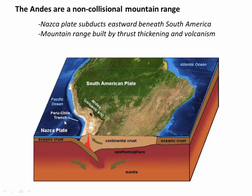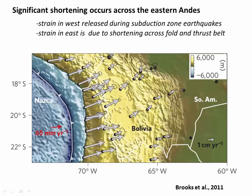So what are the Andes? How are they formed? They're a non-collisional mountain range. What that means is that, unlike the Himalaya, there was never a continent-continent collision in the Andes. Essentially, we have the Nazca Plate subducting down beneath the South American Plate. However, because this subduction is shallow in some places, it's exerting a compressional traction across the Andes, essentially placing the whole mountain range under compression and causing faulting both on the western side and on the eastern side.